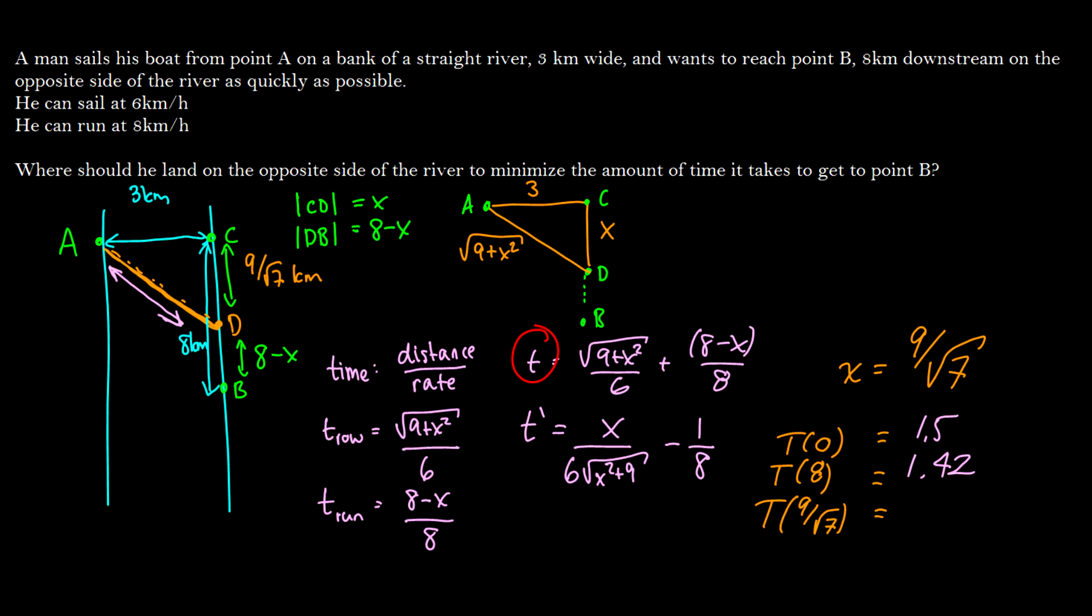Which, of course, by Pythagoras, that should make sense. But if we put in our new value, 9 over the square root of 7, we get approximately 1.33. Which means it's even faster to sail down 9 over the root of 7 kilometers and then run the rest of the way.